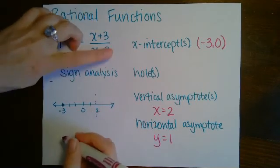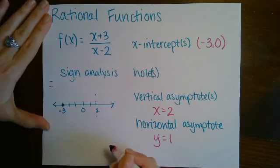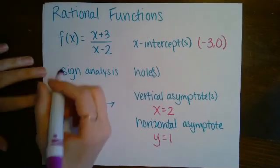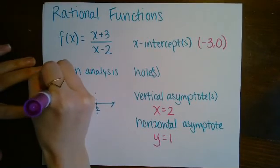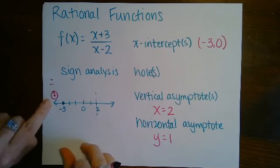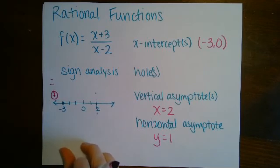And if we had negative 5 minus 2, the answer would be negative. And we know that a negative divided by a negative is a positive, so we know that the function is positive when we're to the left of negative 3.